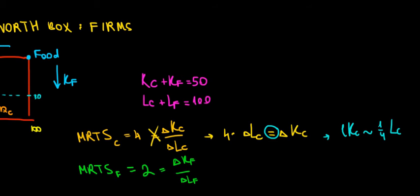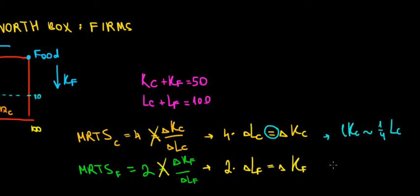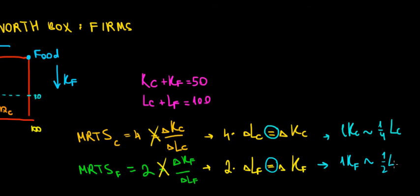The same logic goes for the food company. If we do a cross product, we get: 2 times the change in labor of the food company equals the change in capital of the food company. Assuming we exchange one unit of capital for the food company, the change in labor of the food company should be one half. So the food company is also valuing labor more than capital at that specific point, because it is willing to exchange less of it.